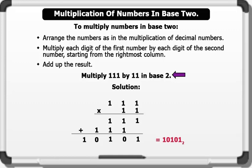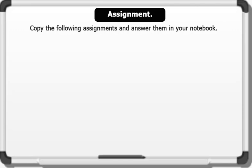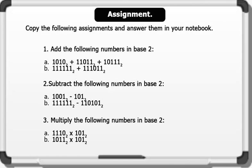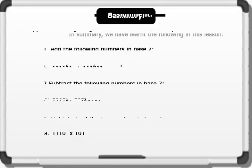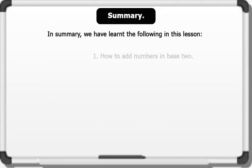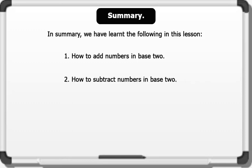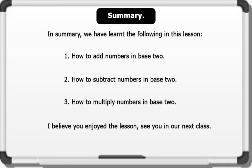Therefore 1 1 1 times 1 1 in base 2 equals 1 0 1 0 1 in base 2. That's brilliant! Assignment: pause the video, copy the following assignments and write the answers in your notebook. In summary, we have learned the following in this lesson: 1) how to add numbers in base 2, 2) how to subtract numbers in base 2, and 3) how to multiply numbers in base 2. I believe you enjoyed this lesson; see you in our next one.